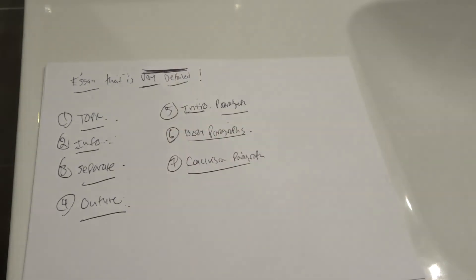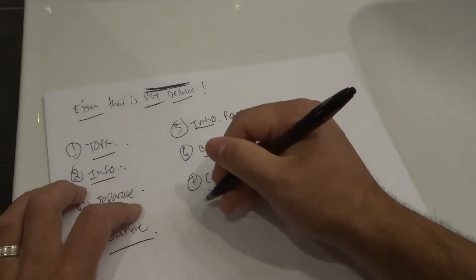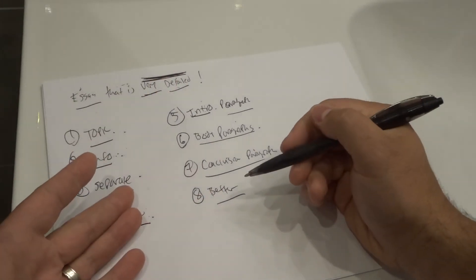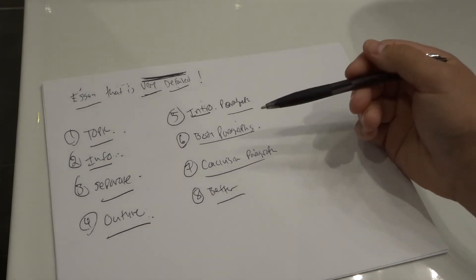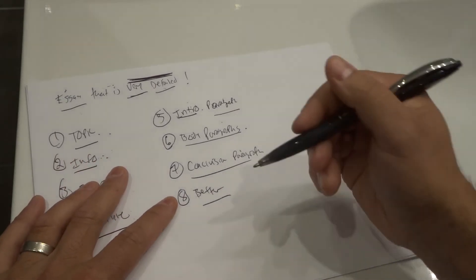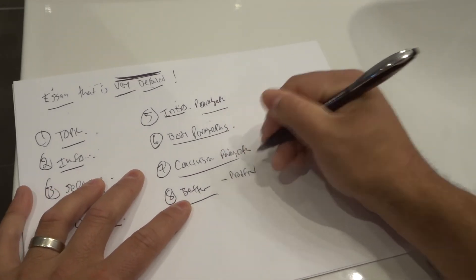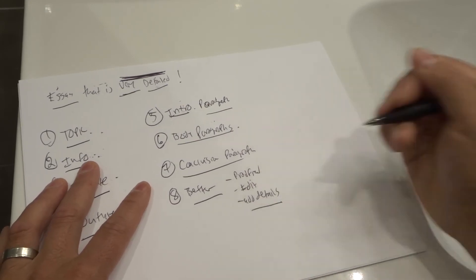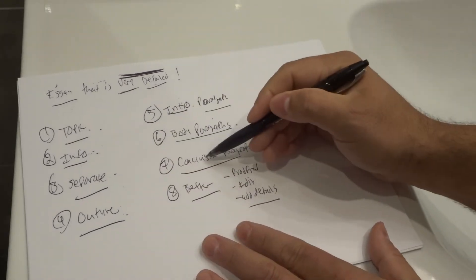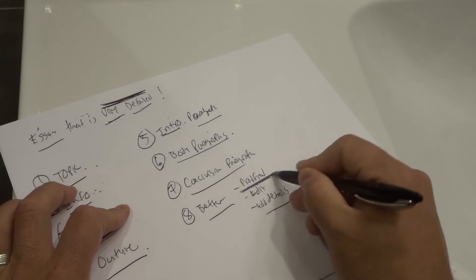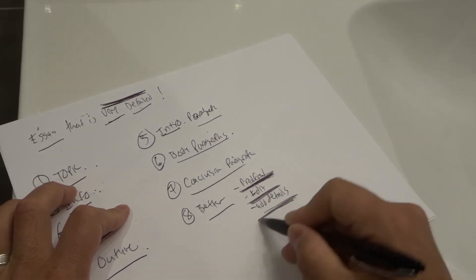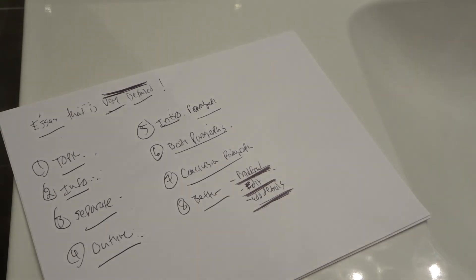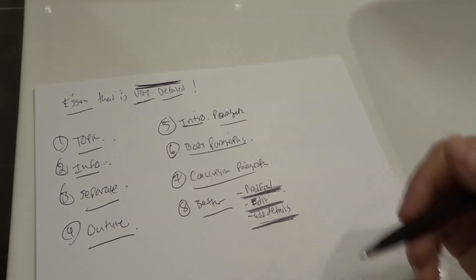You've now essentially written your descriptive essay, but you're not fully done yet. Step number eight is to make it better. You do things like proofread and edit it yourself, then give it to someone else to proofread and edit as well. You're also going to add in more details. You can ask for help from other people for proofreading and editing, and consult experts to add details as well.